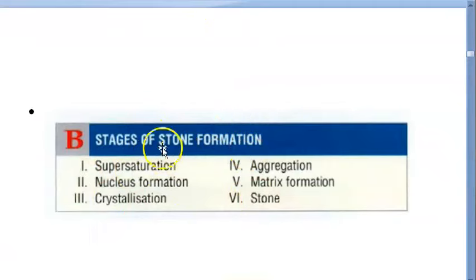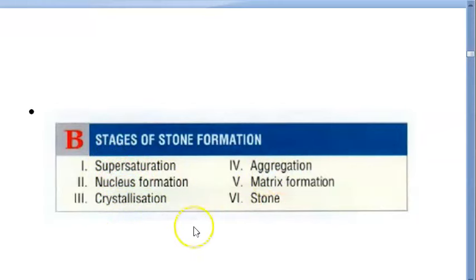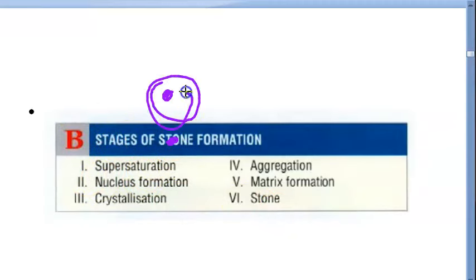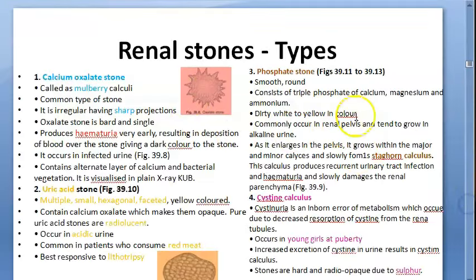The stages of stone formation are: supersaturation, nucleus formation, crystallization, aggregation, matrix formation, and stone. There are four types of stones you should know.